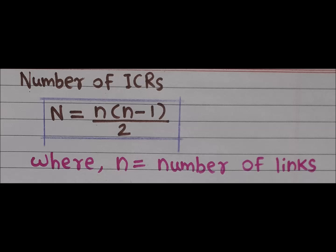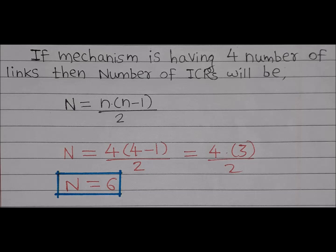Consider a mechanism with four links. The number of ICRs is given by n(n-1)/2. With n equal to 4, the number of ICRs will be 4 into 3 divided by 2, which equals 6.